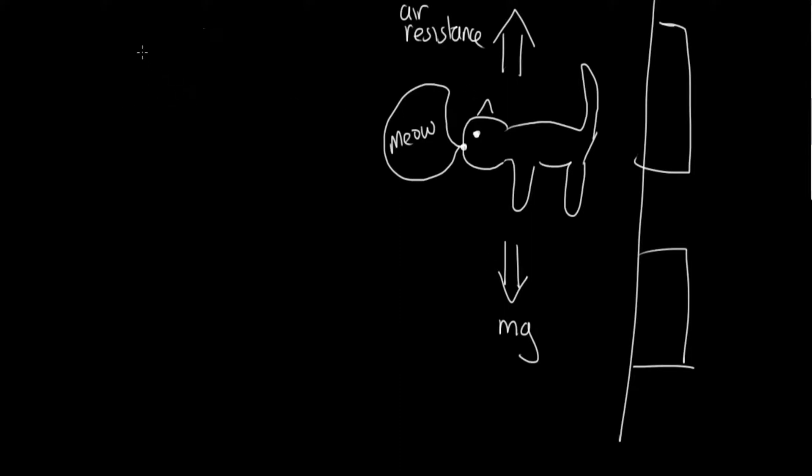So at that point when the air resistance is equal to the weight force, it stops accelerating which means that this cat actually starts to fall at a constant velocity. So this velocity is called the terminal velocity of the cat.